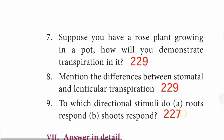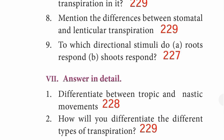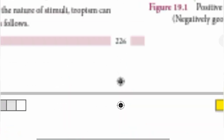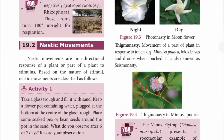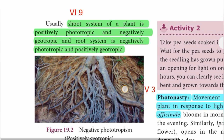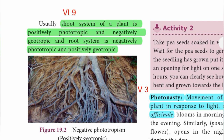Question nine: to which directional stimuli do roots and shoots respond? The shoot system of a plant is positively phototropic and negatively geotropic. The root system is negatively phototropic and positively geotropic.